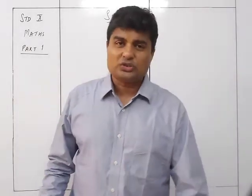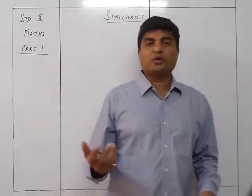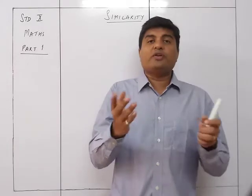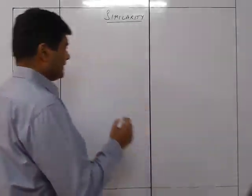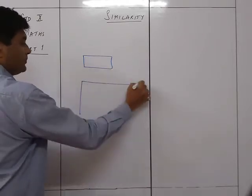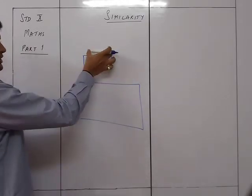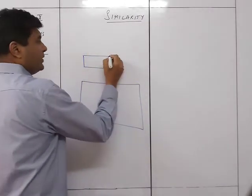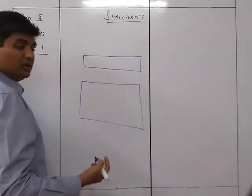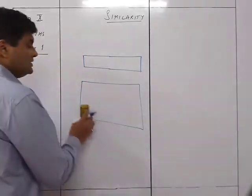All squares are similar figures because they are all the same shape. But all rectangles are not similar, because rectangles can have different shapes — one rectangle could be long and narrow, another could be wider. It's not necessary that the ratio of length to width is the same for both rectangles. However, all squares and all circles are similar figures.